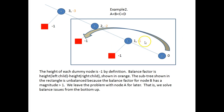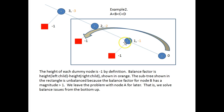The balance factor calculations: minus one minus zero equals minus one; minus one minus one equals minus two; and minus one minus two equals minus three. We start as far down as we can. So here we have B, C, and D and there's a problem. What we're going to do is rotate to the left, so B will go down, C will come up, and D will come up.